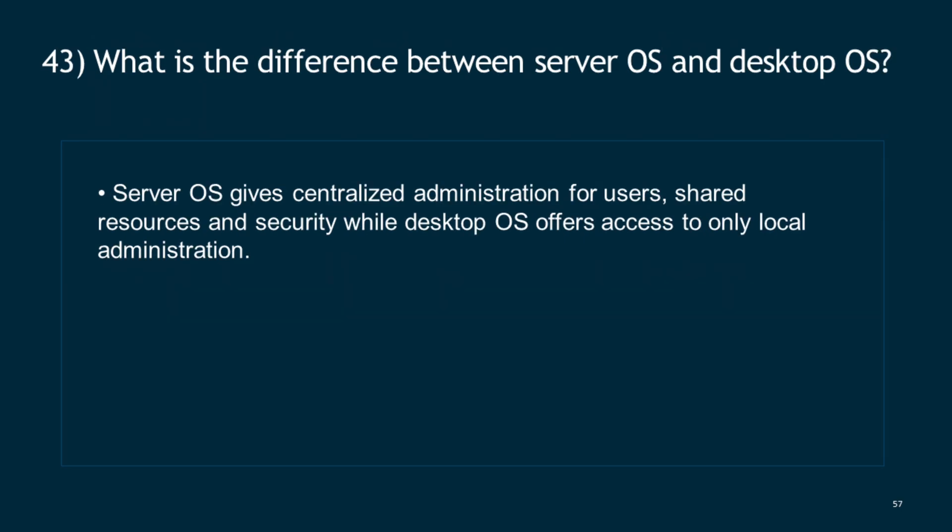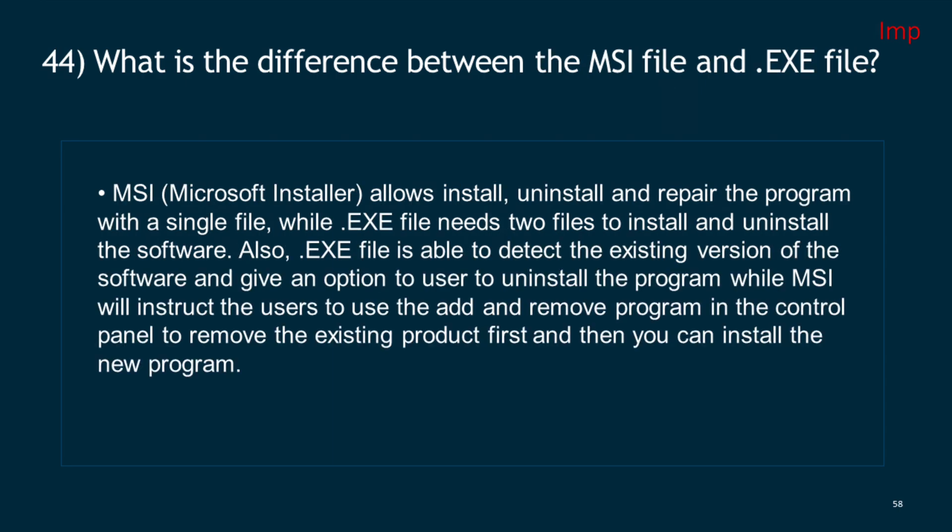Question 43: What is the difference between Server OS and Desktop OS? Server OS gives centralized administration for users, shared resources, and security, while Desktop OS offers access to only local administration. Question 44: What is the difference between an MSI file and an .exe file? MSI (Microsoft Installer) allows install, uninstall, and repair of a program with a single file, while an .exe file needs two files to install and uninstall the software.